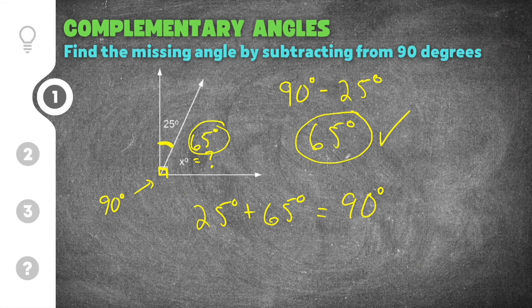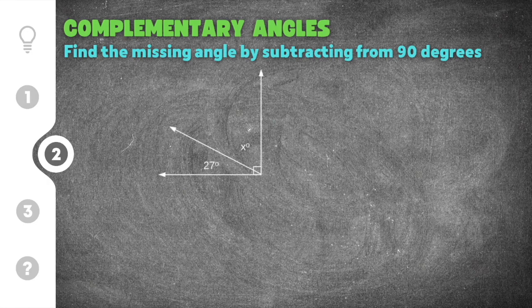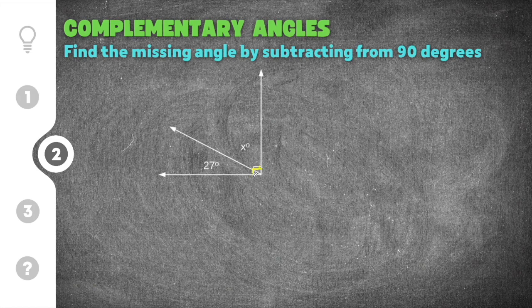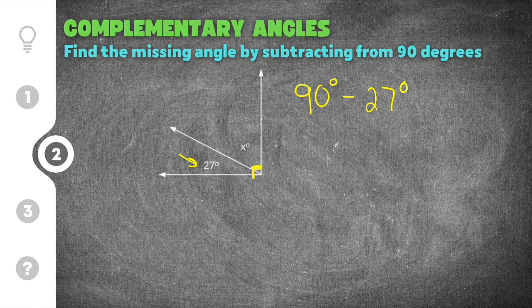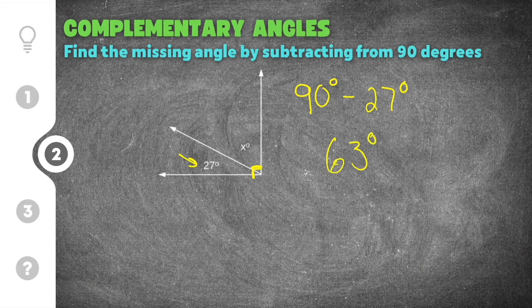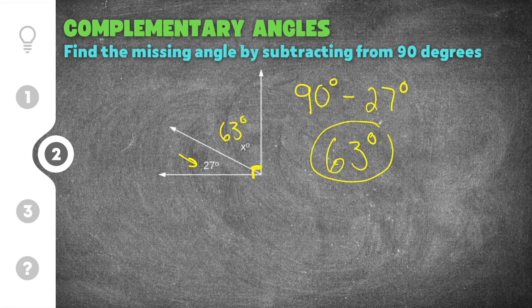Moving on to the second practice problem on complementary angles, this problem gives us another diagram. It also has a right angle symbol here, so we know they add up to 90, and this time we know 27 degrees. We're going to use our formula: 90 degrees minus the angle we know, which is 27 degrees, and 90 degrees minus 27 degrees is going to be 63 degrees. Our missing angle in this case is 63 degrees, and that's going to be our answer.